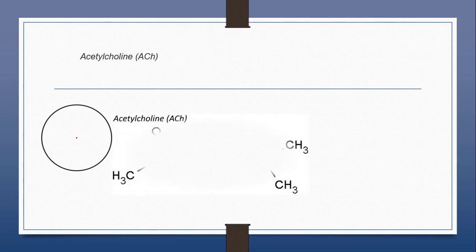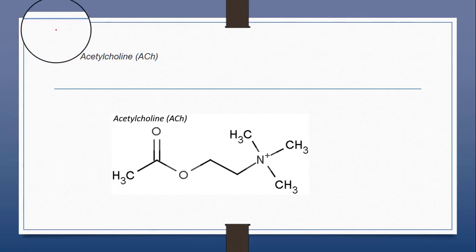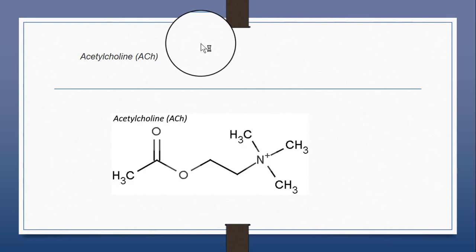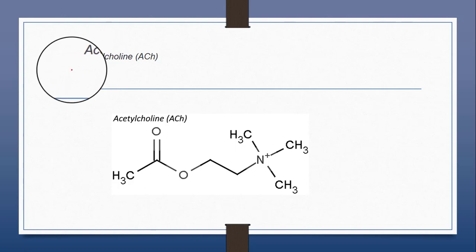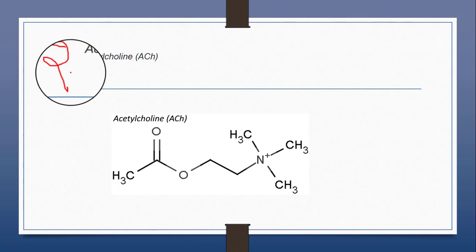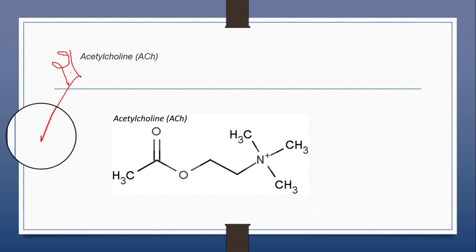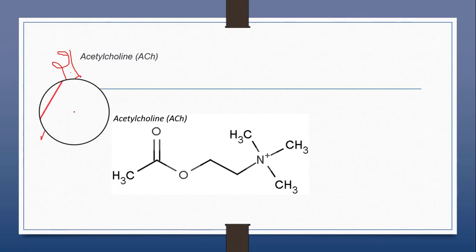Glutamate has four receptors: NMDA, AMPA, kainate, and metabotropic G-protein coupled receptors. The NMDA receptor is an ionotropic receptor permeable to sodium, potassium, and calcium ions. The AMPA receptor is an ionotropic receptor permeable to sodium and potassium ions. The kainate receptor is also an ionotropic receptor permeable to sodium and potassium ions, similar to AMPA but much less common. The last receptor is the metabotropic G-protein coupled receptor.